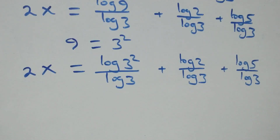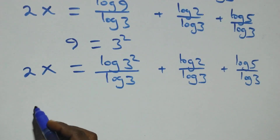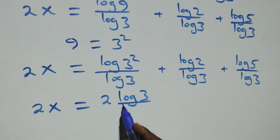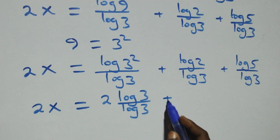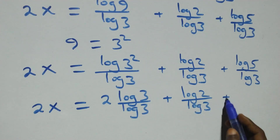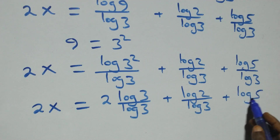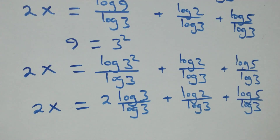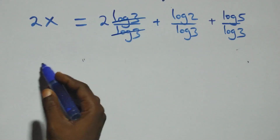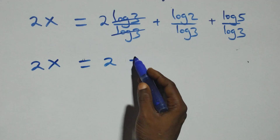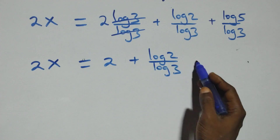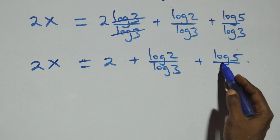We apply the power rule of logarithms: the 2 comes down. We have 2x equals 2 log 3 over log 3 plus log 2 over log 3 plus log 5 over log 3. The log 3 terms cancel each other and 2 is left, giving 2x equals 2 plus log 2 over log 3 plus log 5 over log 3.